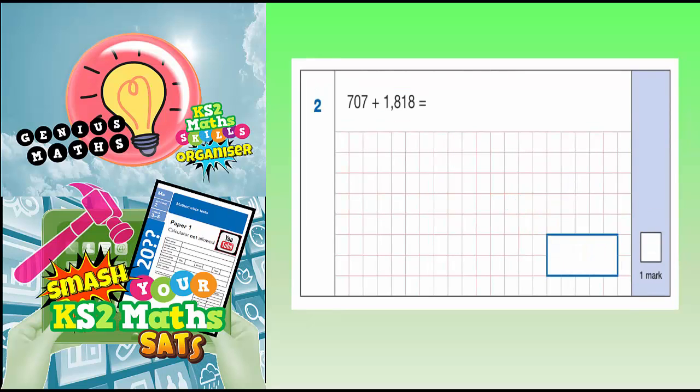Question 2. 707 add 1,818. Now this is simply one that you should be using a column method for. Don't try and do this in your head.